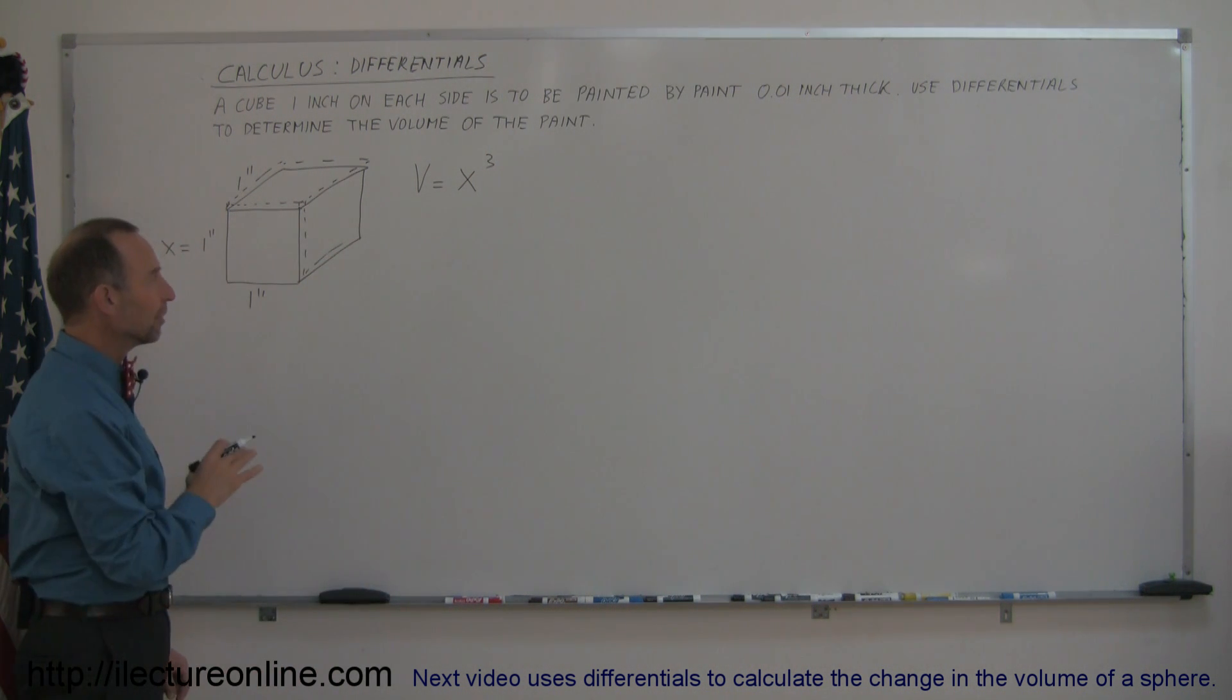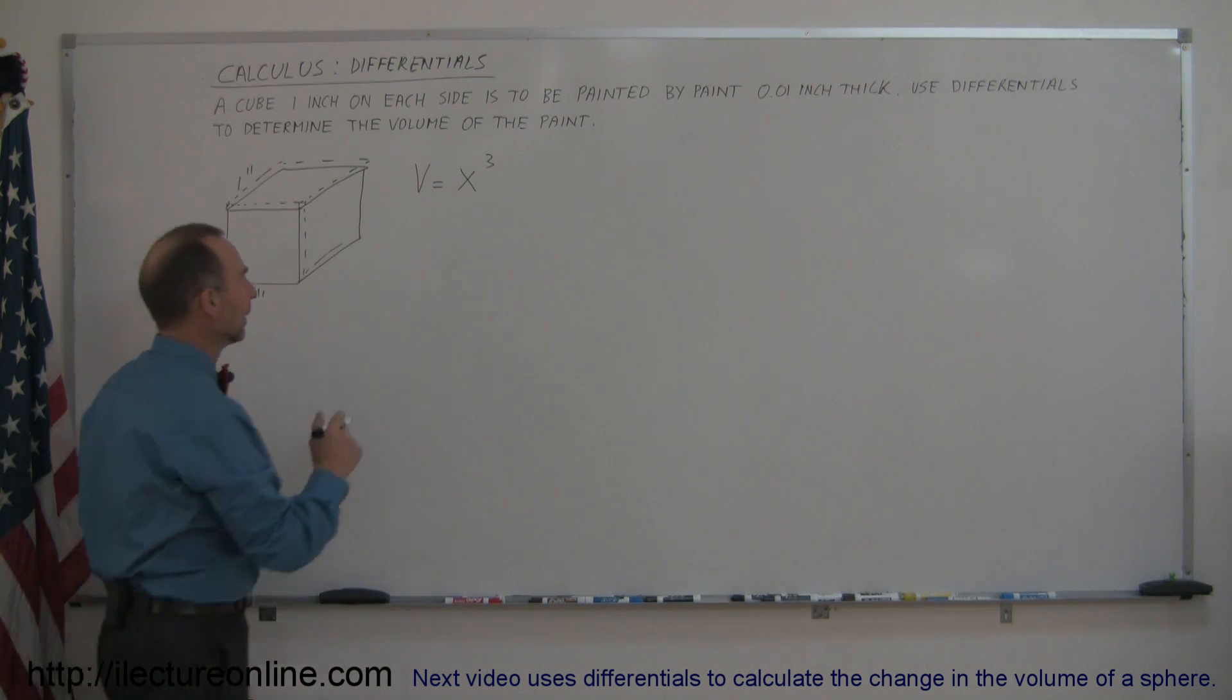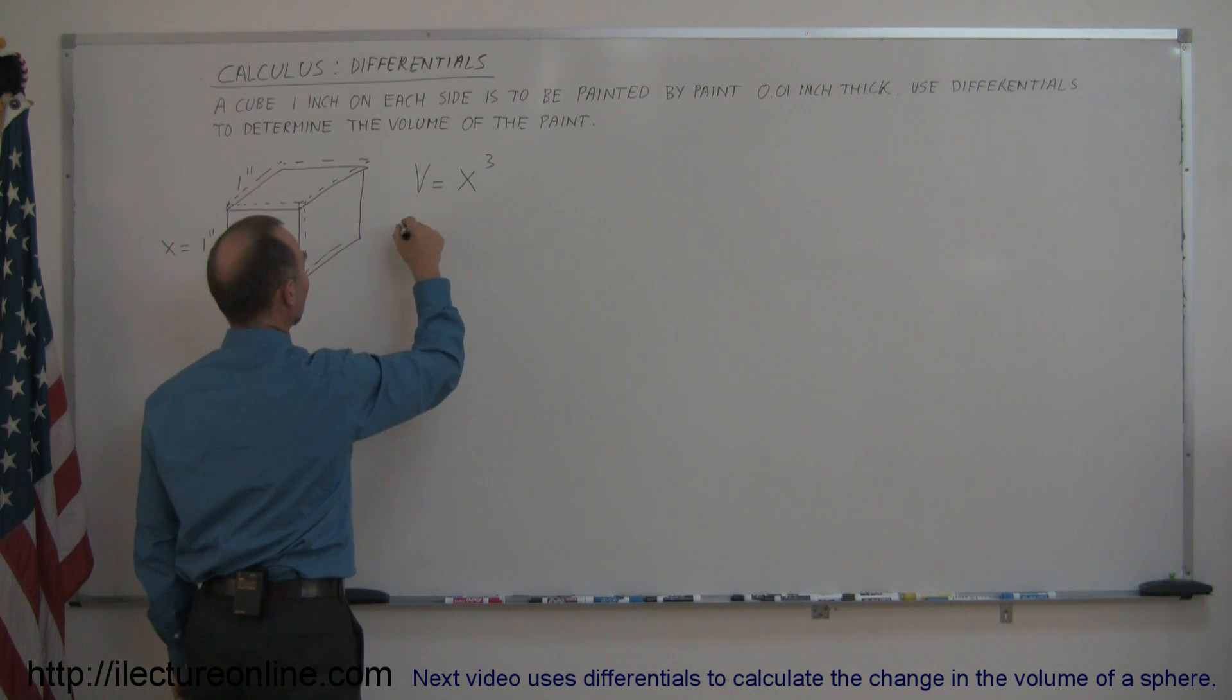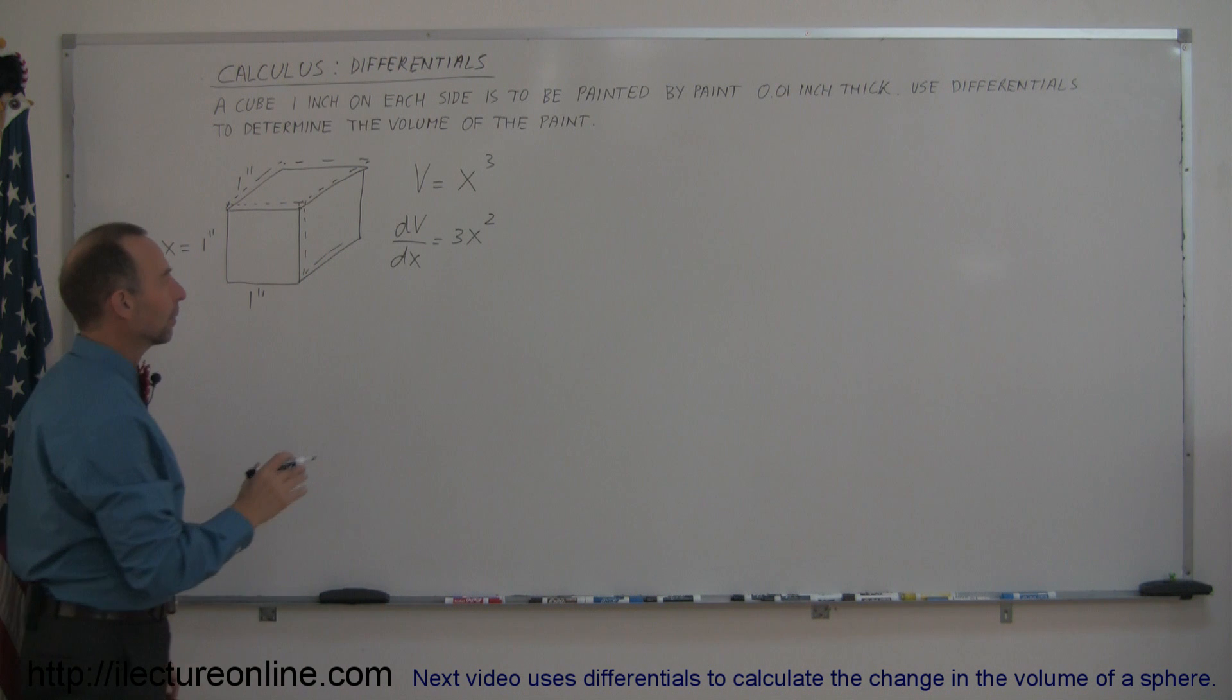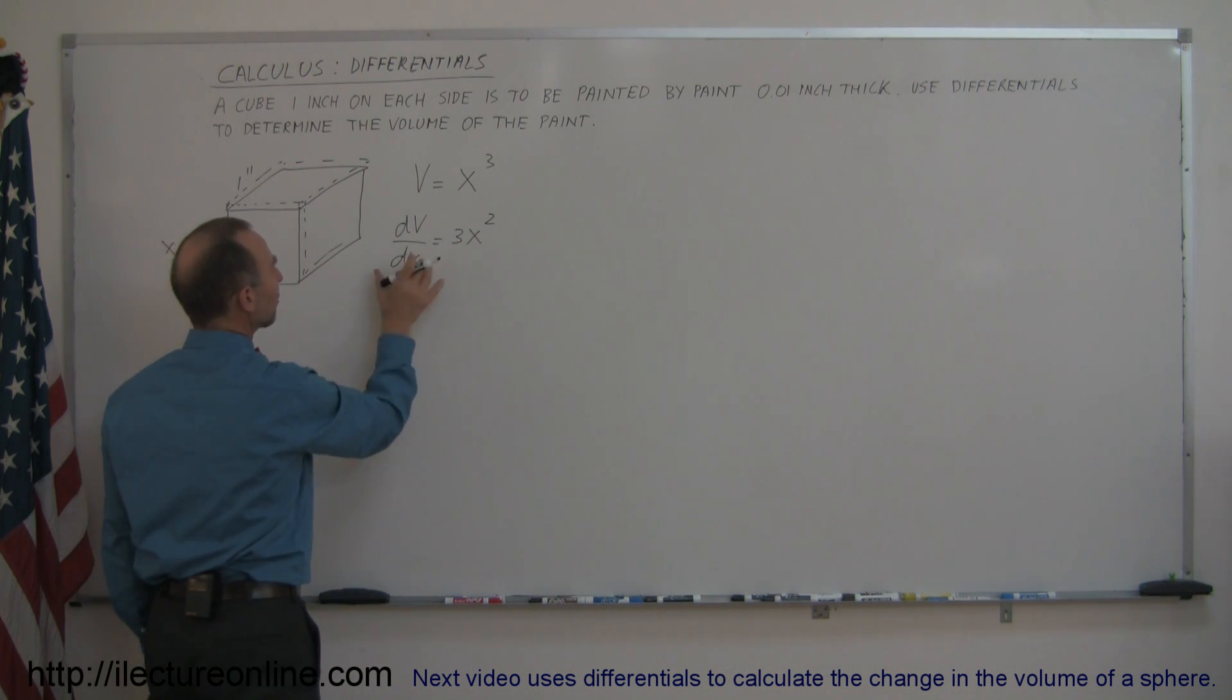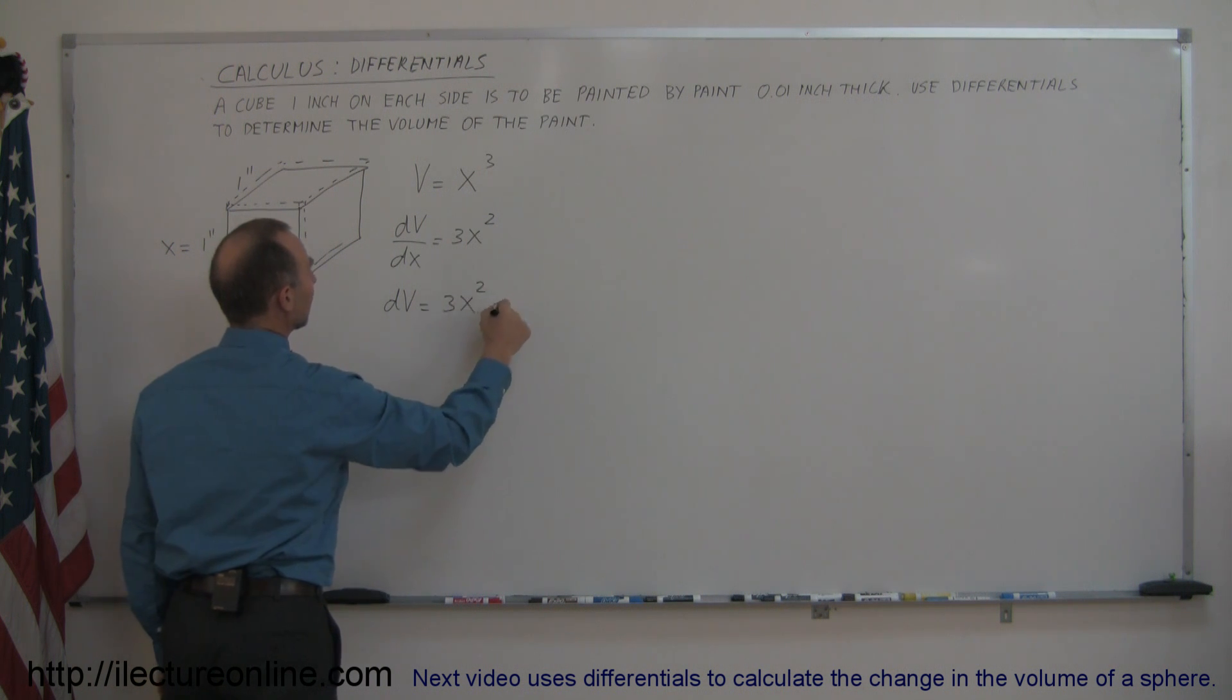Let's now take the derivative of the volume. So if we take the derivative of the volume with respect to x, we can then say that dV/dx is equal to 3x squared. And now I'm going to multiply both sides of the equation by dx. So we can say dV is equal to 3x squared dx.